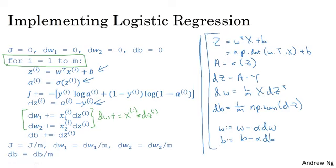But with this, you've just implemented a single iteration of gradient descent for logistic regression. Now, I know I said that we should get rid of explicit for loops whenever you can, but if you want to implement multiple iterations of gradient descent, then you still need a for loop over the number of iterations. So if you want to have a thousand iterations of gradient descent, you might still need a for loop over the iteration number. There's an outermost for loop like that, and I don't think there's any way to get rid of that for loop. But I do think it's incredibly cool that you can implement at least one iteration of gradient descent without needing to use a for loop.